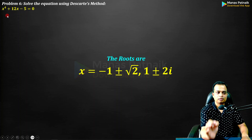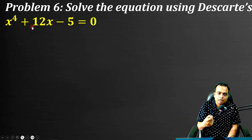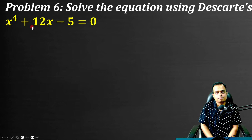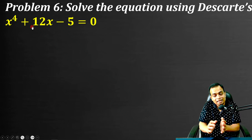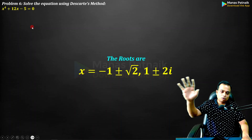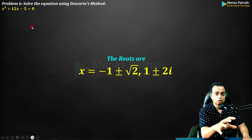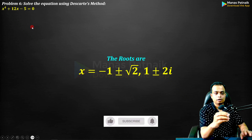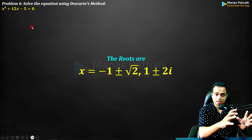To recap: in this problem the x³ term was missing, so we directly applied Descartes' method. If the x³ term exists in your problem, you must first apply the diminishing of roots transformation, then apply Descartes' method. I hope you found this lecture very informative and that it helps you solve many more problems. If you found this content helpful, please like the video and share the channel with your friends and classmates.